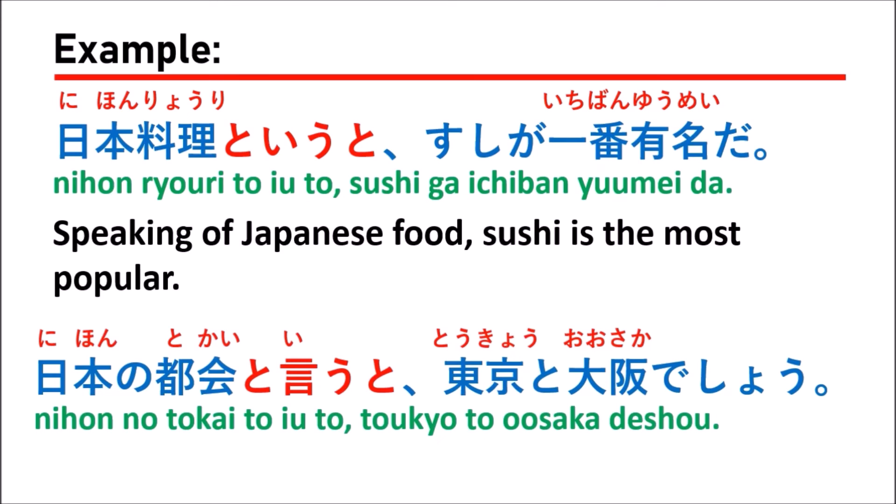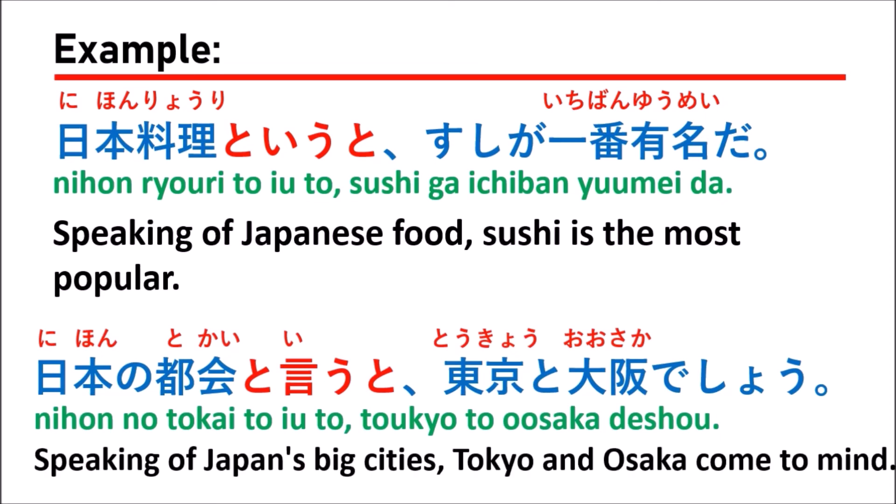The next example: 「日本の都会と言うと東京と大阪でしょ」(nihon no tokai to yuto, Tokyo to Osaka desho), which means: speaking of Japan's big cities, Tokyo and Osaka come to mind. When we talk about Japan's big cities, we naturally think of Tokyo and Osaka. Of course, Japan has other famous cities like Hiroshima, Nagasaki, and Hokkaido, but Tokyo and Osaka are the most well-known.